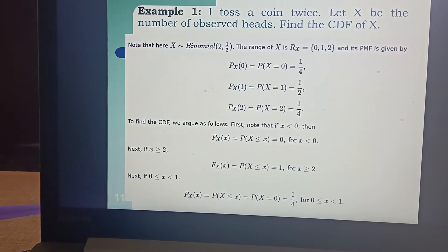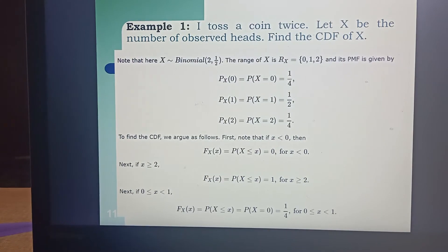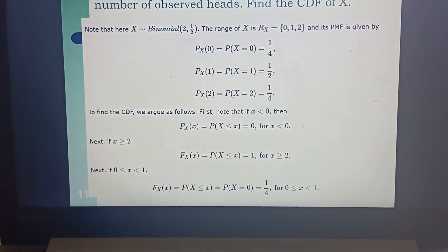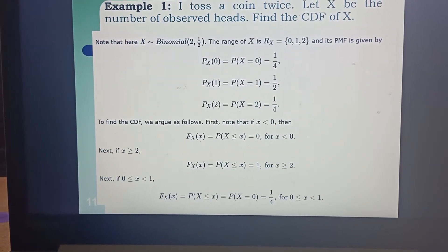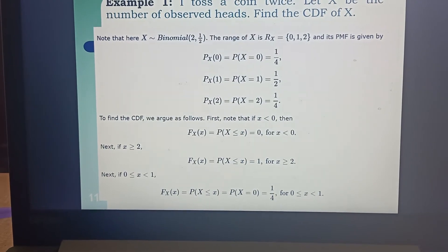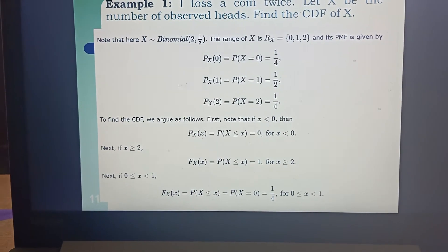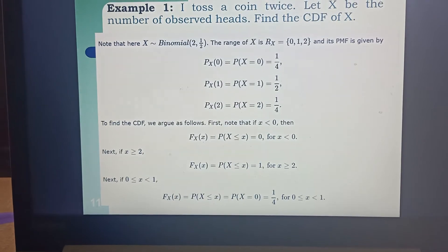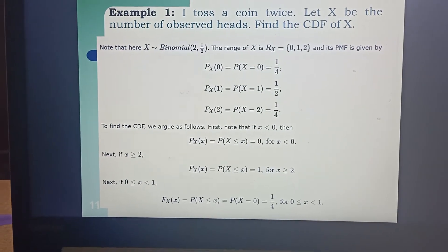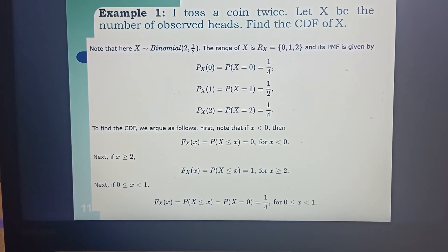The next condition is x is greater than or equal to 0 and less than 1. The cumulative distribution function F(x) is the probability of X being less than or equal to x. Here x is less than 1 and greater than or equal to 0, so we find the range between 0 and less than 1. It is not less than or equal to 1, so we cannot take condition 1. Therefore the probability is p of x equals 0, which we already found from the PMF to be 1 over 4.